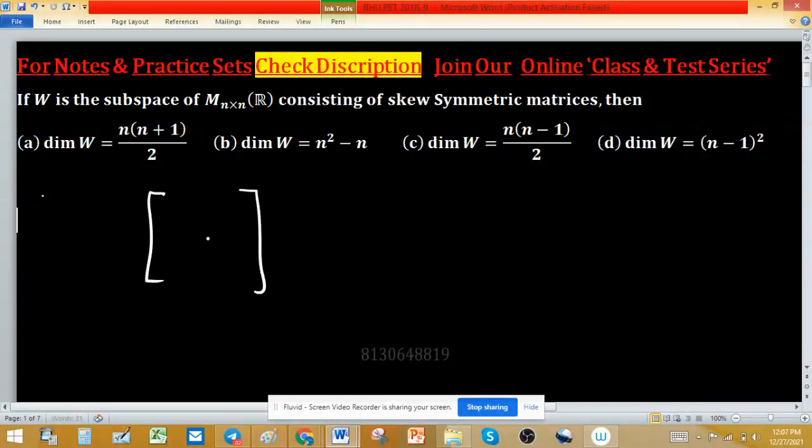Suppose this is the type of the square matrices and this matrix is skew symmetric matrix, then diagonal elements are zero. And suppose this is an element A, then at this place element will be minus A.